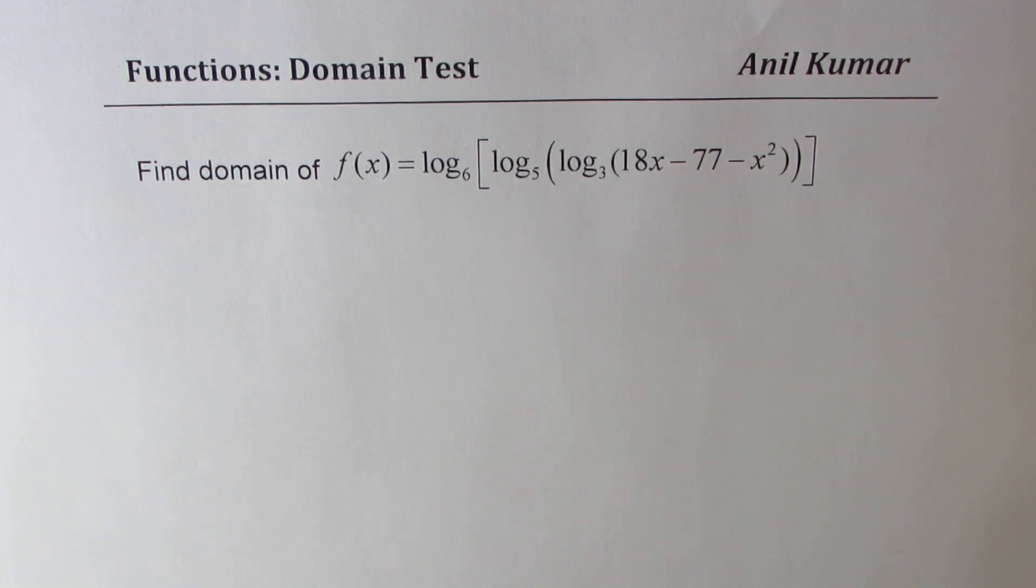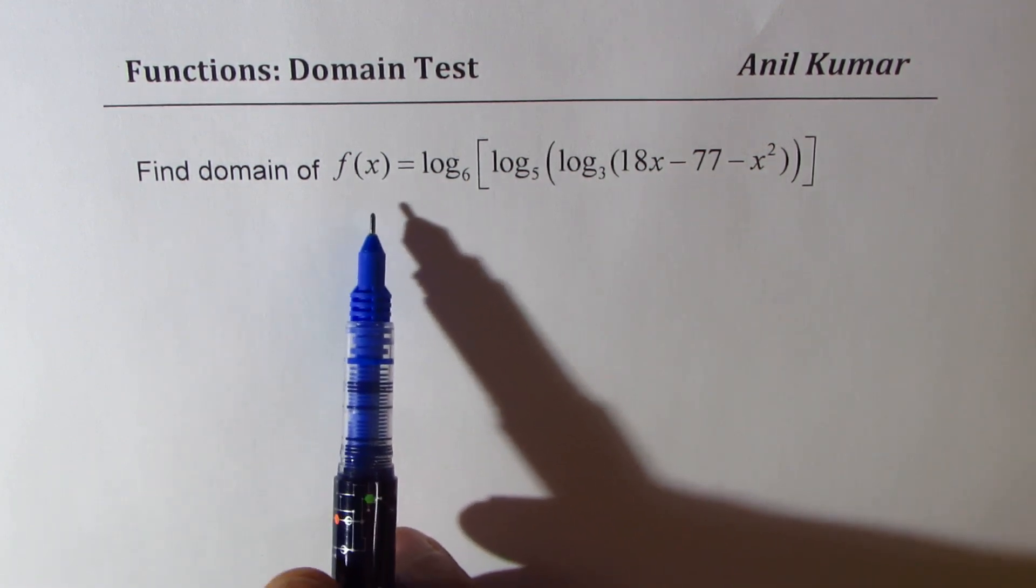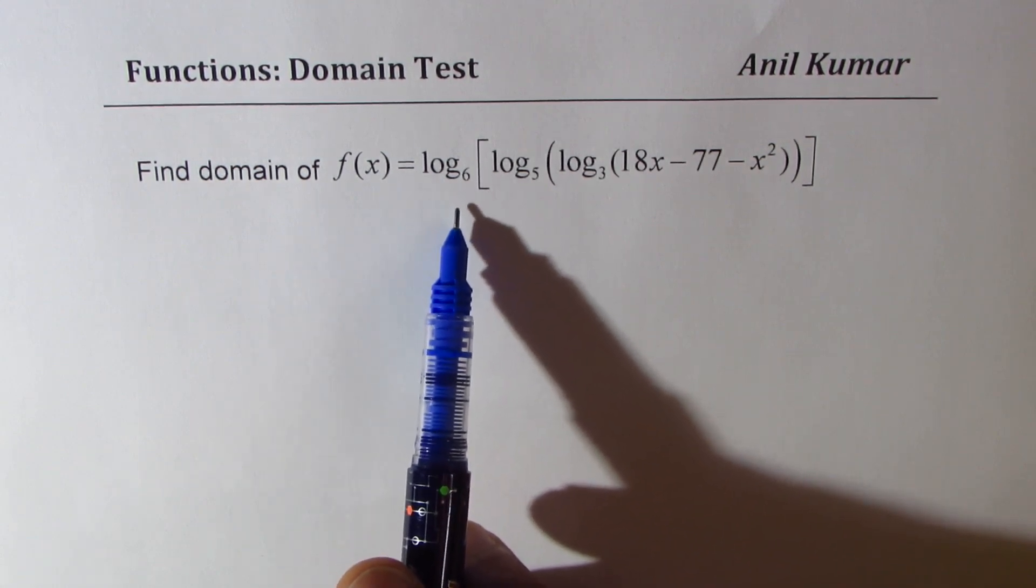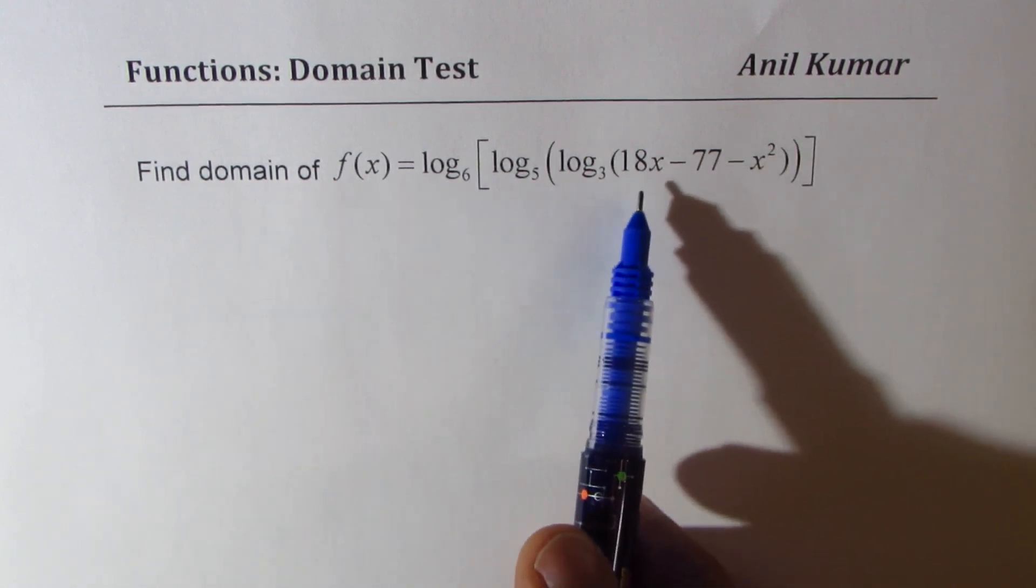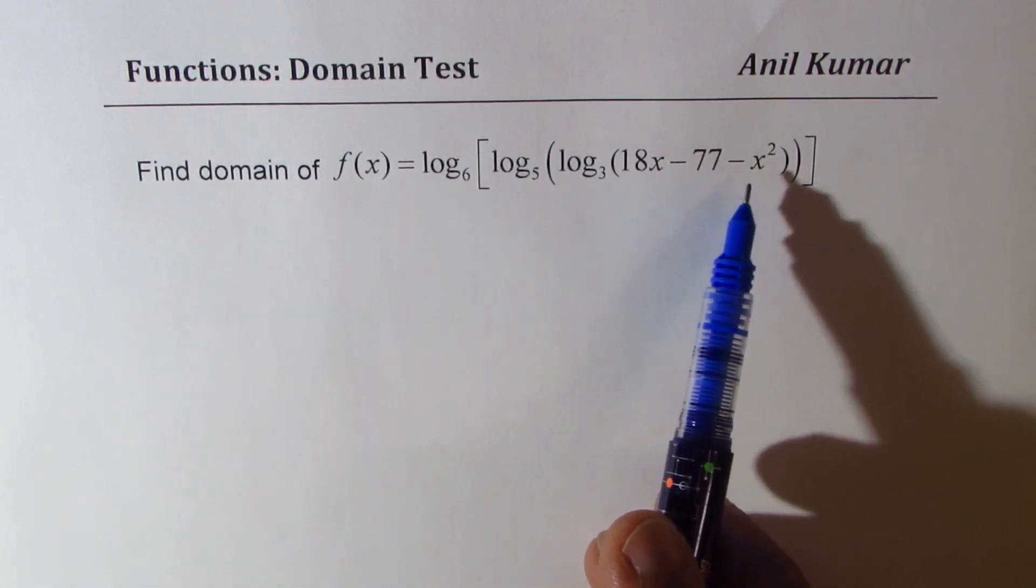We need to find domain of f(x) which is equal to log base 6 of log base 5 of log base 3 of 18x minus 77 minus x squared.